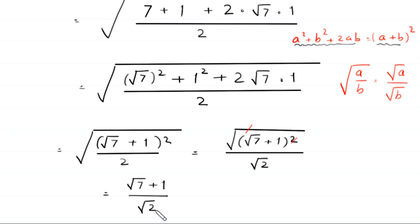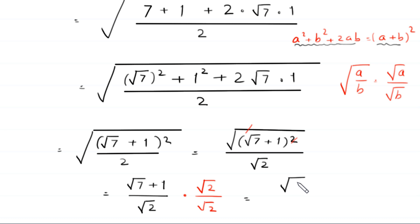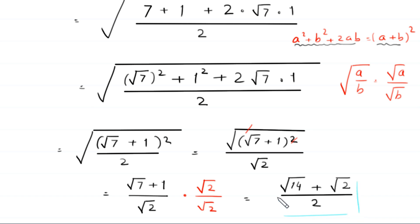To rationalize the denominator, we multiply and divide by square root of 2. Square root of 2 times square root of 7 becomes square root of 14, plus square root of 2 times 1 gives square root of 2, divided by square root of 2 times square root of 2 which equals 2. So by method 2 we get the same answer as method 1: (square root of 14 plus square root of 2) over 2.